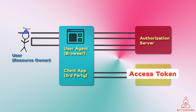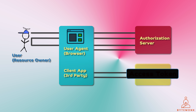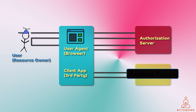The access token is only valid for a certain amount of time, after which it expires. When the access token expires, the application will need to obtain a new one from the authorization server. Access tokens are an important part of the OAuth authorization framework — they allow applications to access protected resources on behalf of users without sharing the user's password, helping to protect the user's privacy and security.